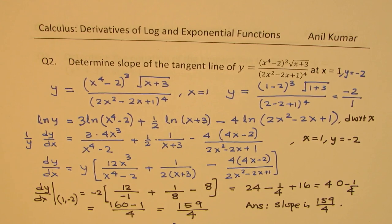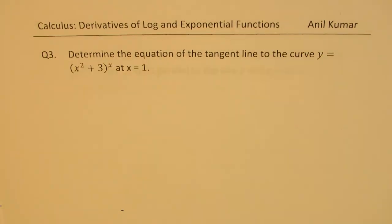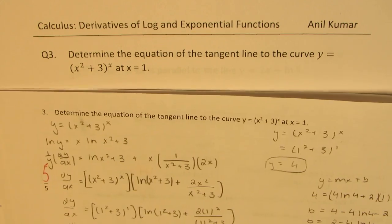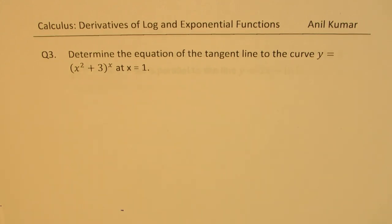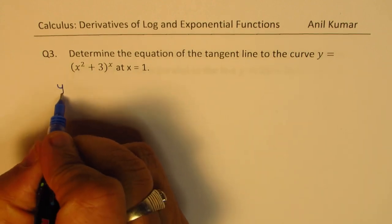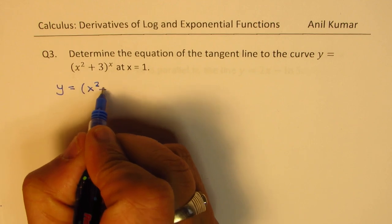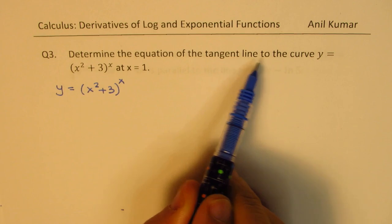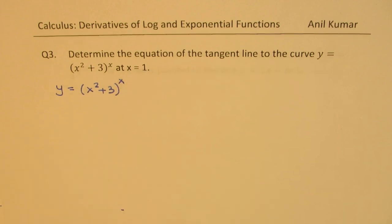So that is how we answer this particular question. I hope that helps. Now we need to find the equation of a tangent line where the curve is given to us. That is question number 3, which we are going to take up now. I'd like you to pause the video, answer this question, and then look into my suggestions. We are given the function y equals (x squared plus 3) to the power of x, and we need to find the equation of the tangent line at x equals 1.